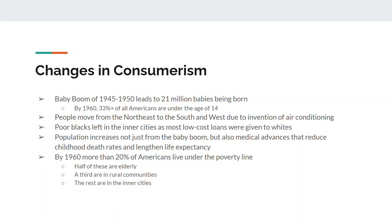It's not just a population increase from children being born — there are also medical advances created during World War II that lead to a reduction in childhood death rates and longer life expectancy. Medical equipment has come a long way by the 1950s, and modern medicine and antibiotics are curing a lot of infections. Another big change is that those who are poor end up getting poorer. By 1960, one out of every five Americans is below the poverty line — including one out of every two senior citizens, one out of every three people in a rural setting, and of course inner-city residents.